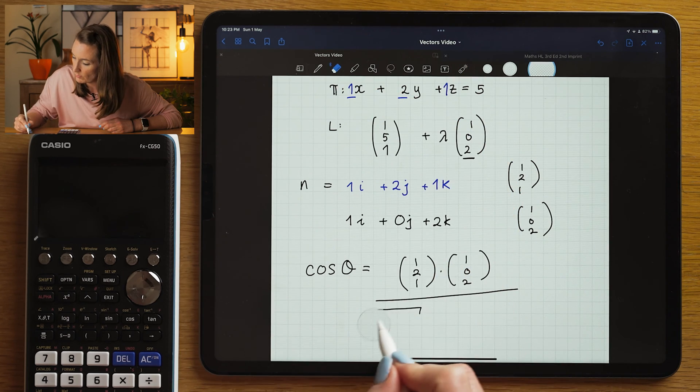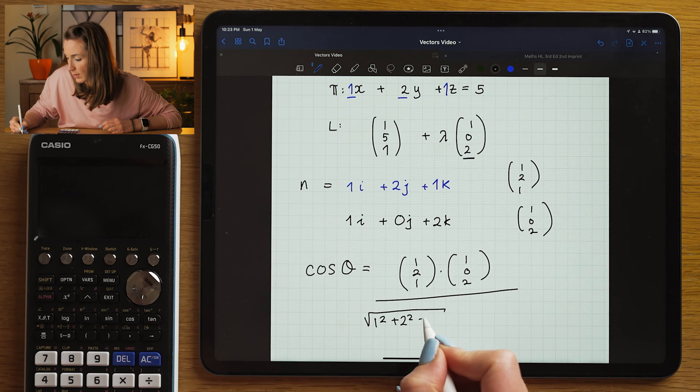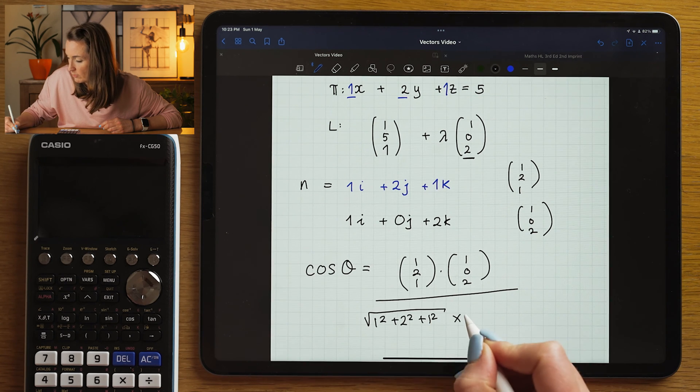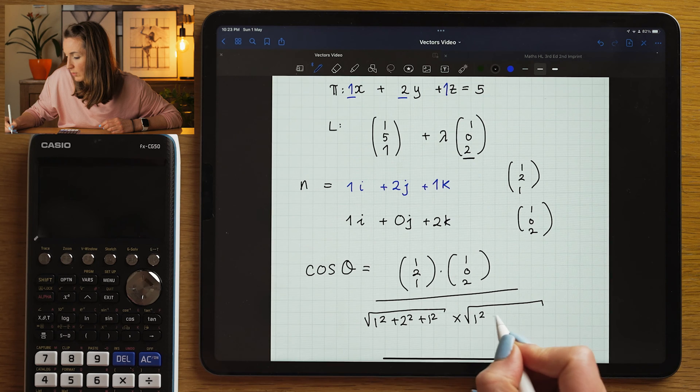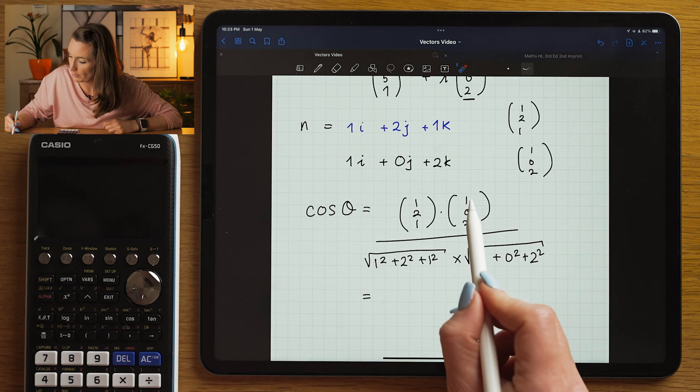So how would I find the magnitude of this vector here? Well, I need to square all its components. So I'm going to do 1 square plus 2 square plus 1 square times by the square root of 1 square plus 0 square plus 2 square.